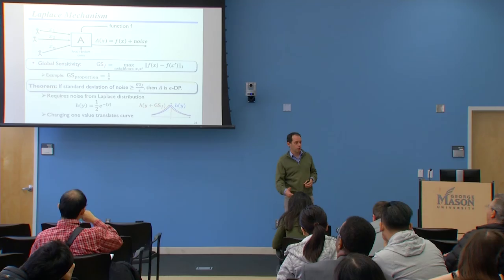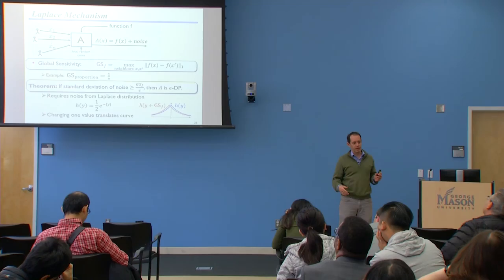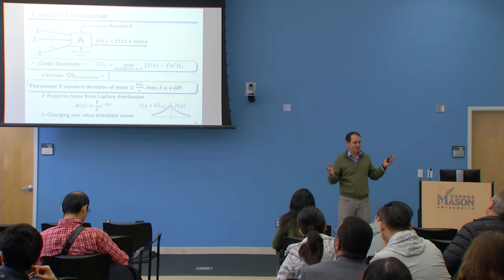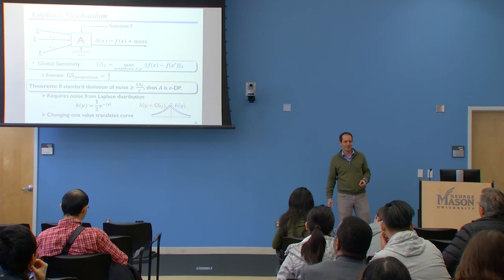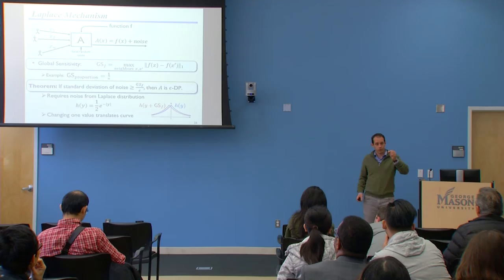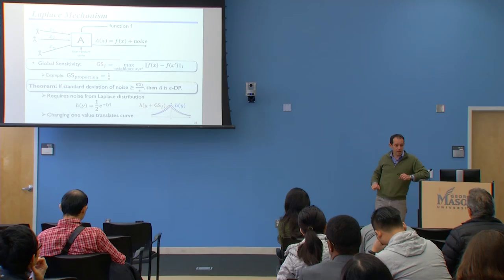There's a question about whether there are assumptions on the function. They're encoded via the sensitivity quantity — that's effectively the restriction on the function. If the function is something crazy, the theorem will say to add so much noise that the output is totally useless. For proportions, if I think of you as a representative sample of academics and want to estimate the fraction who've cheated on exams, the noise I'd add is on the order of one over epsilon n, which goes to zero much faster than the sampling error of one over square root of n for modest values of epsilon.